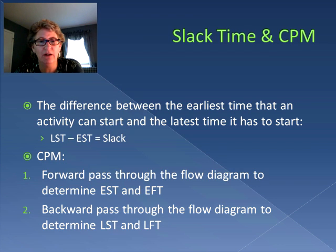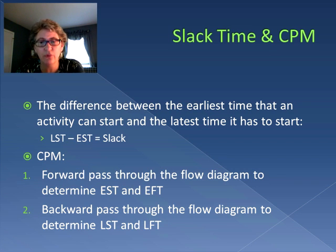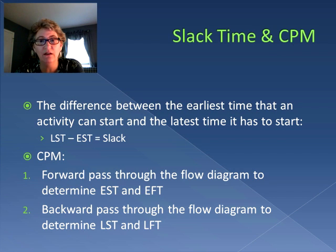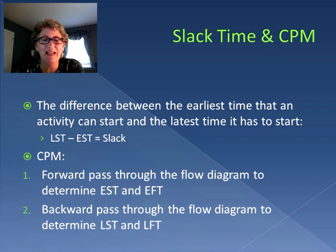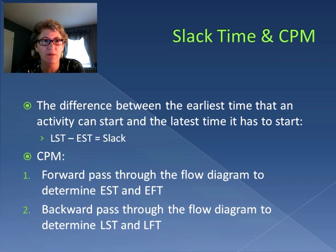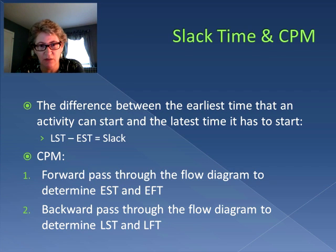In order to figure out slack, we use what's known as the critical path method, where we take a forward pass through the flow diagram to determine when all the activities can start — the early start time — and as a result, also when the earliest they will finish, which is the early finish time. Then we take a backward pass through the flow diagram to figure out when the latest each activity can start and when the latest each activity will finish. That's the LST (latest start time) and LFT (latest finish time). Then we compare the two. If there is a difference between the early start time and the late start time, we know there's slack.